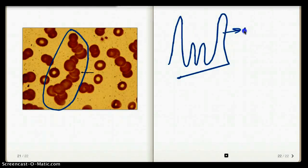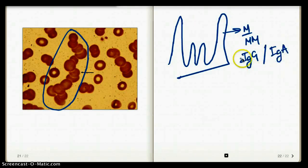An M spike in multiple myeloma is usually caused by an IgG or IgA. It's not all immunoglobulin.